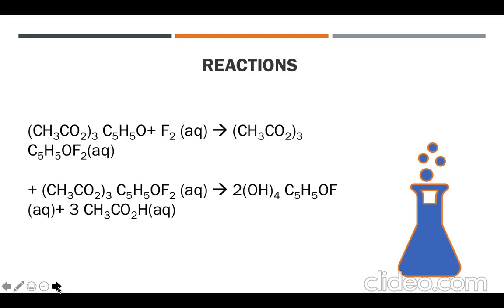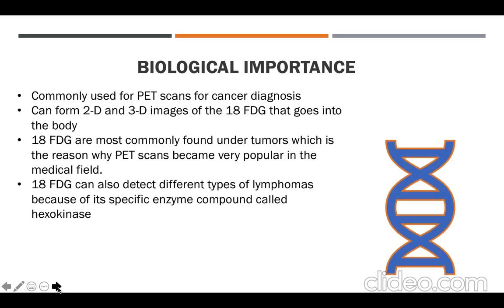Now, some biological importance. 18FDG is commonly used for PET scans for cancer diagnosis. It can also form 2D and 3D images of the 18FDG that goes into the body. 18FDG is most commonly found under tumors, which is the reason why PET scans have become very popular in the medical field.